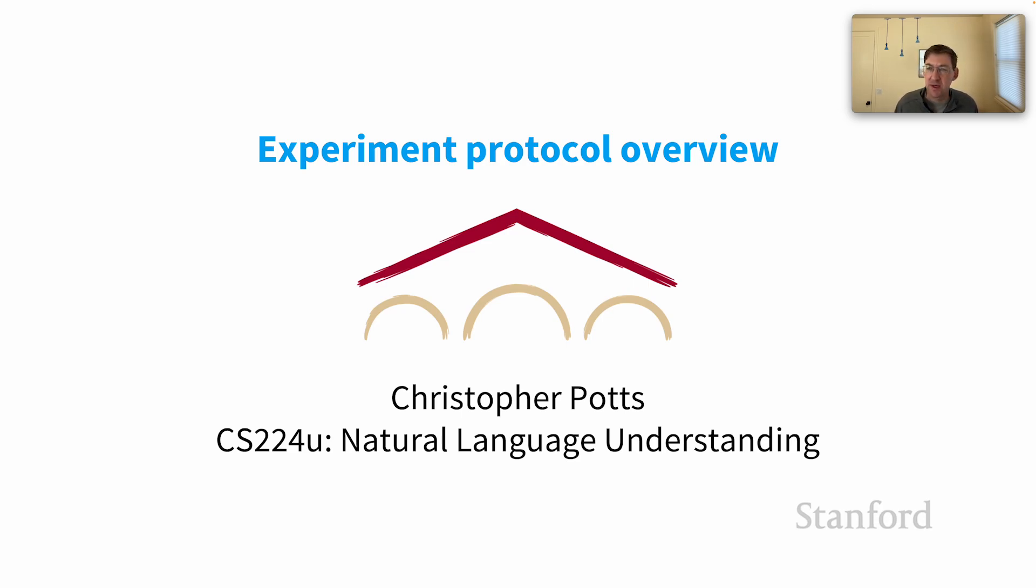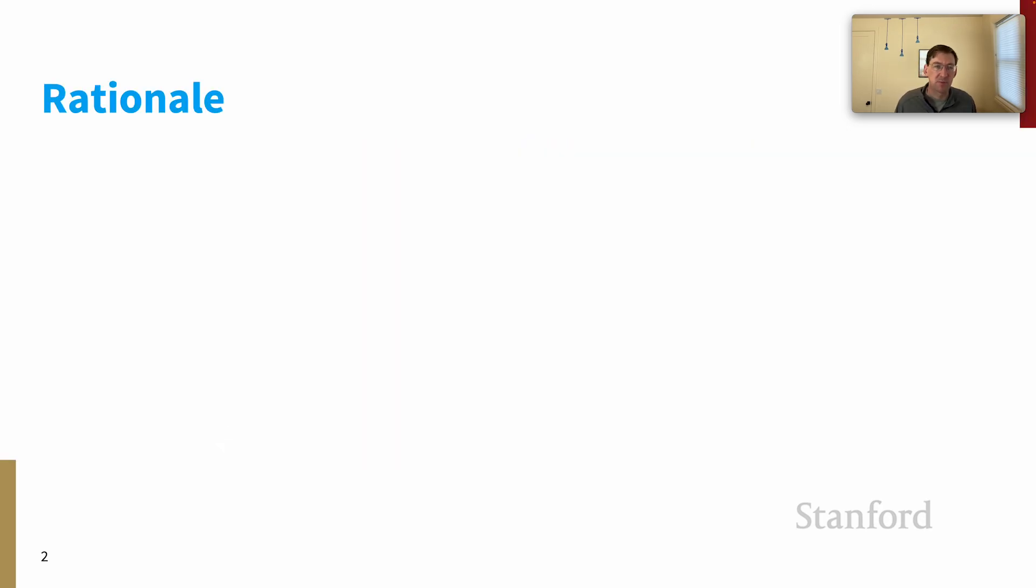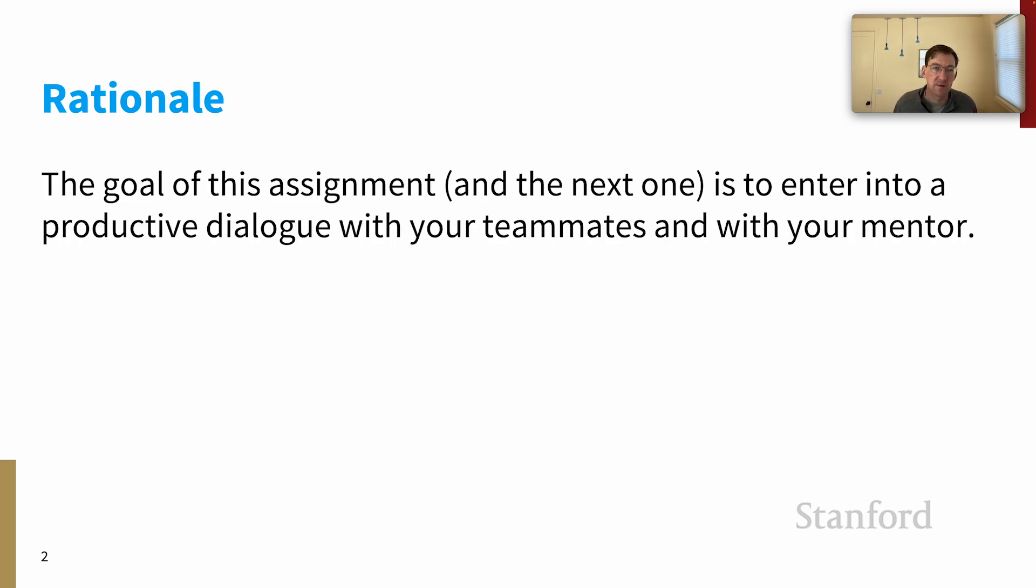It's a somewhat unusual document, but I think it's really important in terms of helping you and your teammates and your mentor get complete clarity on what you're going to achieve for the final paper. The rationale at a high level is the same as the one for the lit review. It's about productive dialogue. We want you in productive dialogue with your teammates and with yourself and with your mentor about the scope of the project and its overall goals.